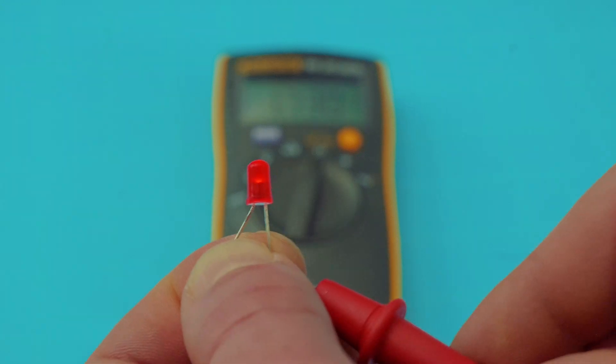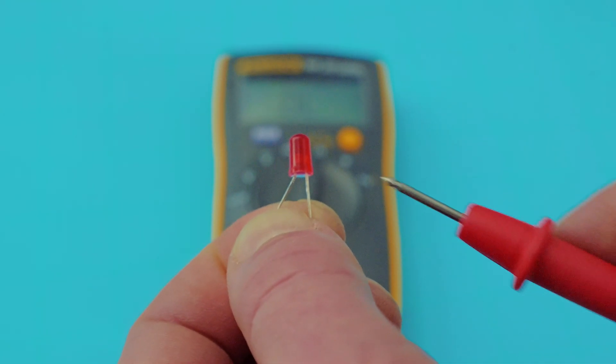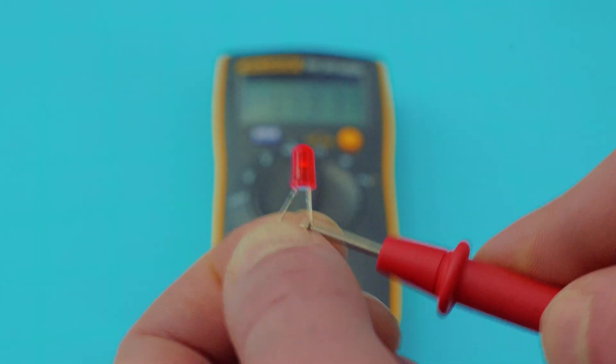So there you have it, folks. It is lit up. Using just your red and black multimeter leads, you can make that light up to check it that way as well.